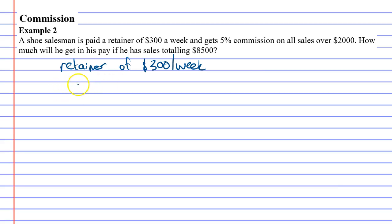His sales total $8,500, but he only gets commission on sales over $2,000. So we need to subtract the $2,000 to see how much money is over that threshold. $8,500 minus $2,000 is $6,500.